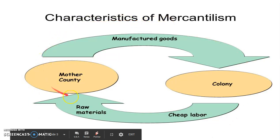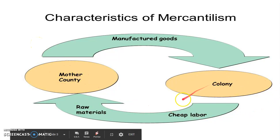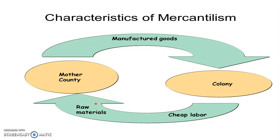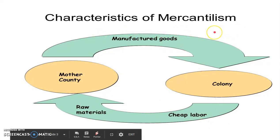What you need to know about mercantilism is you have a mother country like England and a colony like North Carolina. The colony produces raw materials like timber, cotton, tobacco, sugar, and rice for the mother country, who in turn takes those raw materials and sells manufactured goods — like guns, alcohol, and clothing — back to the colony. And this all rests upon cheap labor, i.e. slavery. Slavery is the key component in mercantilism.